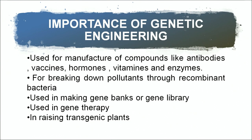Genetic engineering is also used for breaking down pollutants by making recombinant bacteria. Nature has created pathways for the breakdown of pollutants, and we can select bacteria — for example, those with metal resistance genes — recombine them, and use them to clean the environment of those pollutants. It is also used in making gene banks or gene libraries. We have already talked about gene banks, and then it is used in gene therapy.